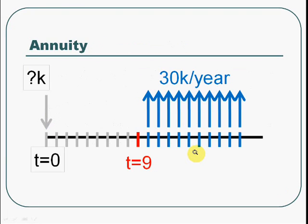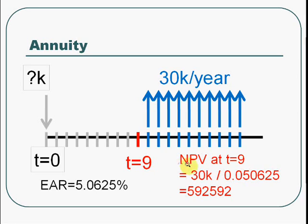Then, how about for the annuity? Annuity is an infinite flow cash flow stream, so we want to find the net present value of this annuity. What we can do is find the net present value when T equal to 9 using this equation: 30k divided by the interest rate. Remember that it gives you the net present value the year before the first cash flow. So we are finding the NPV at T equal to 9 instead of T equal to 10.